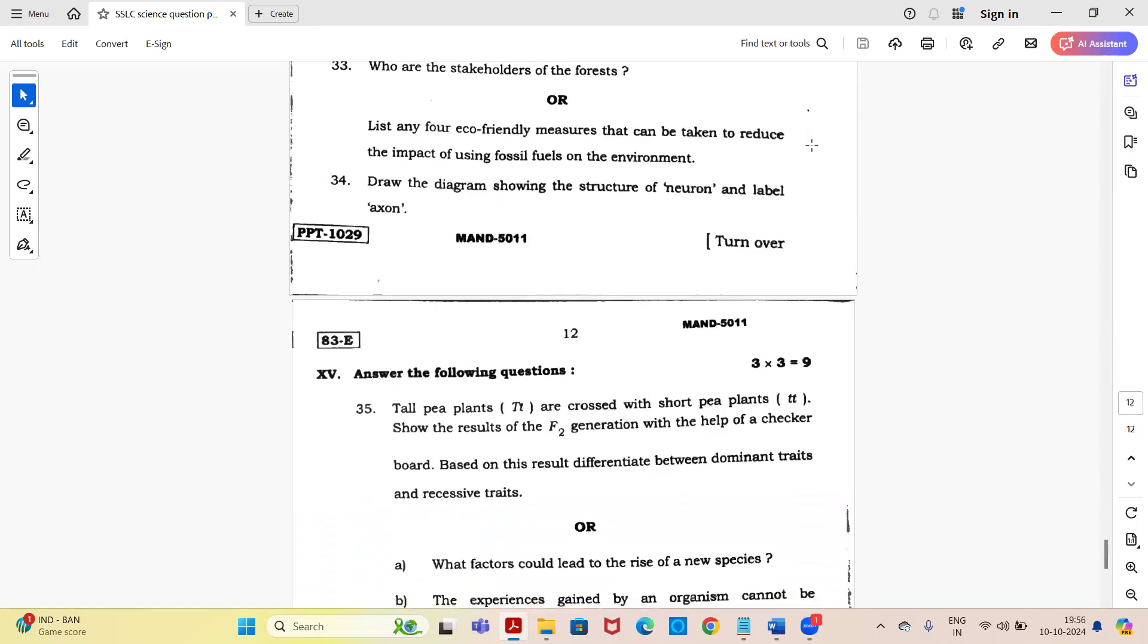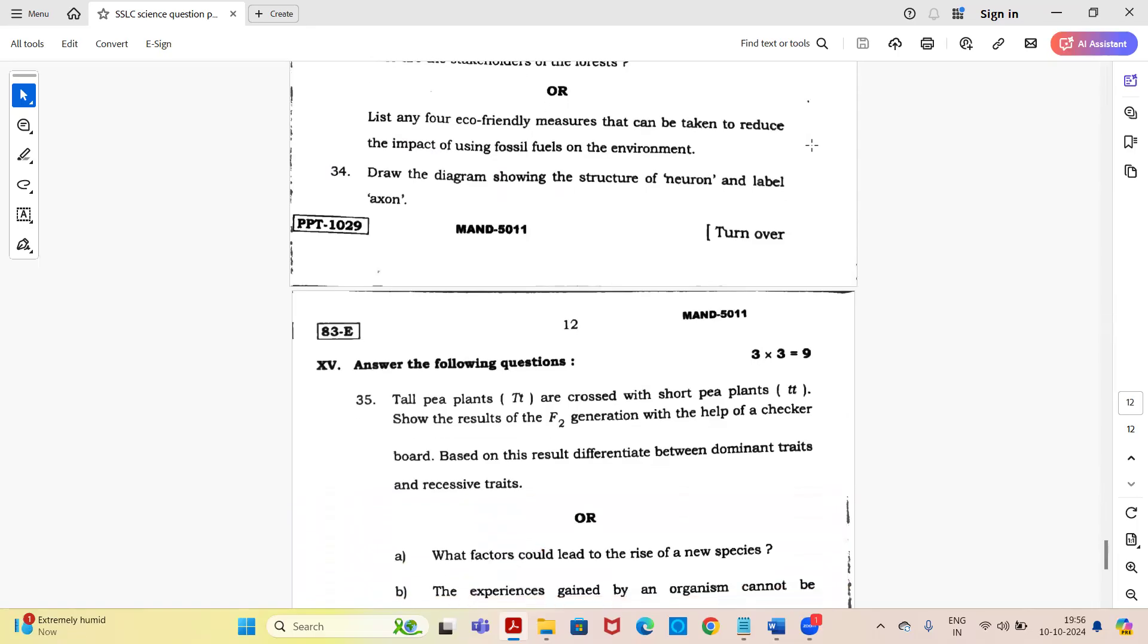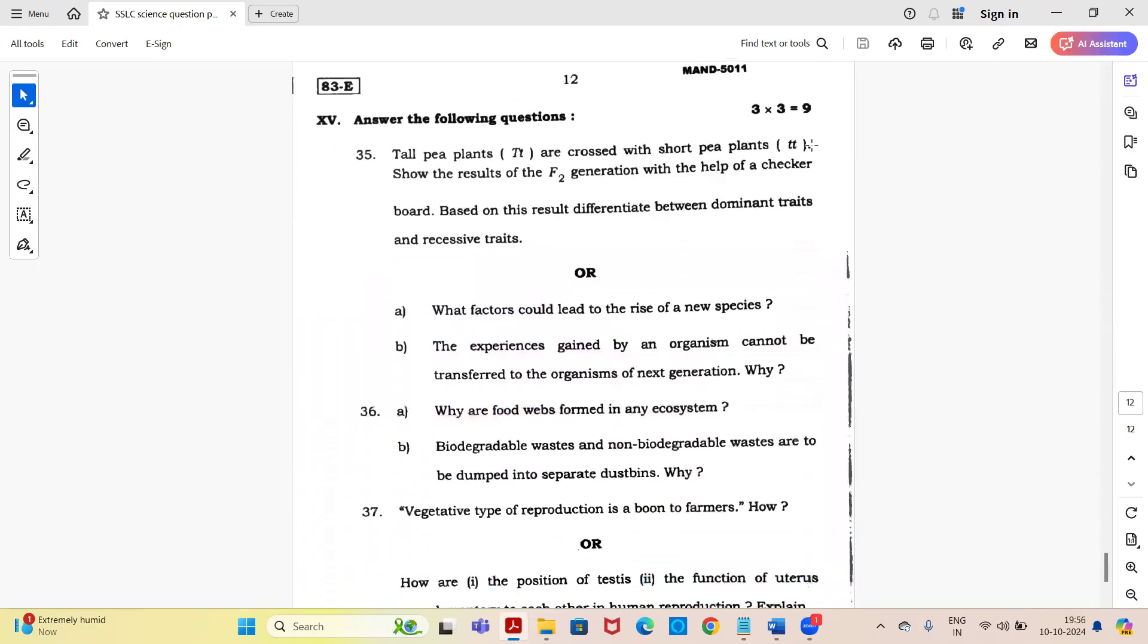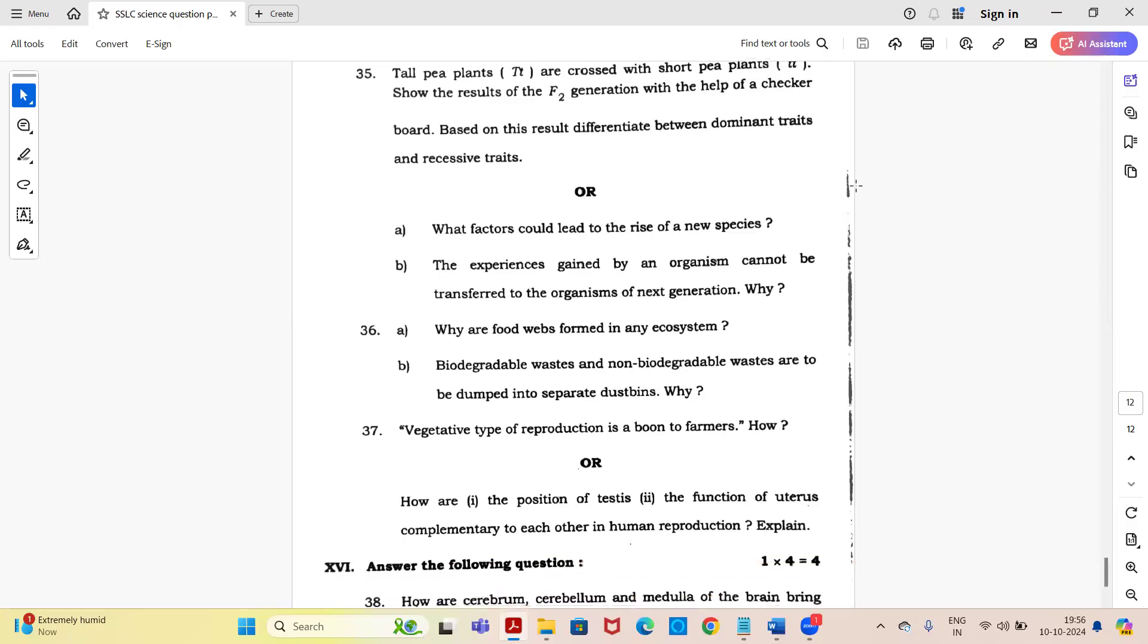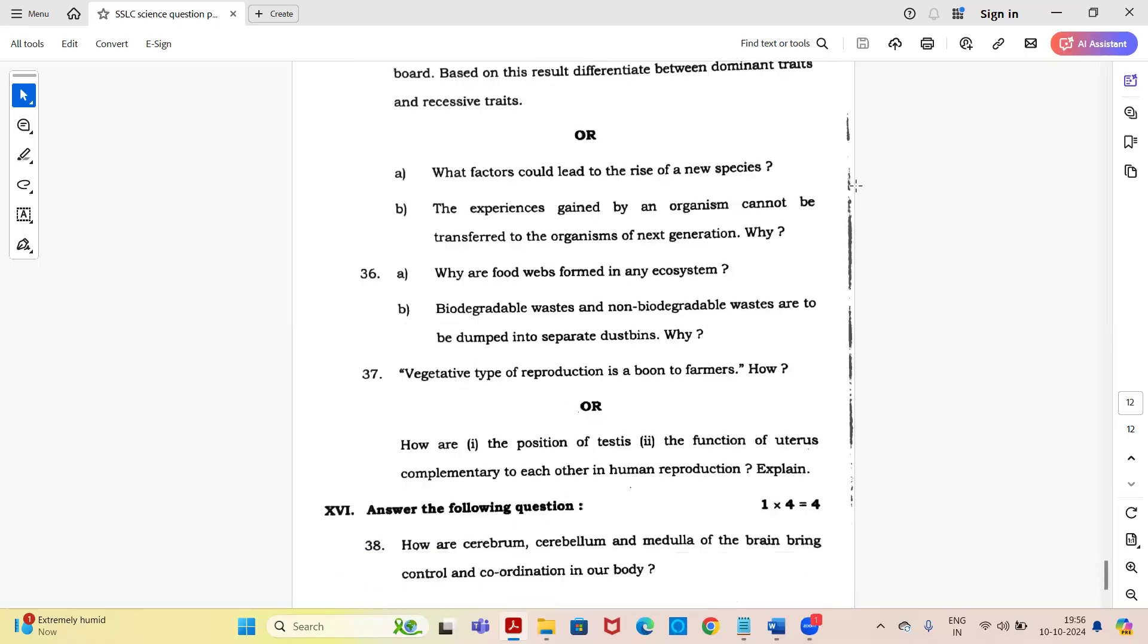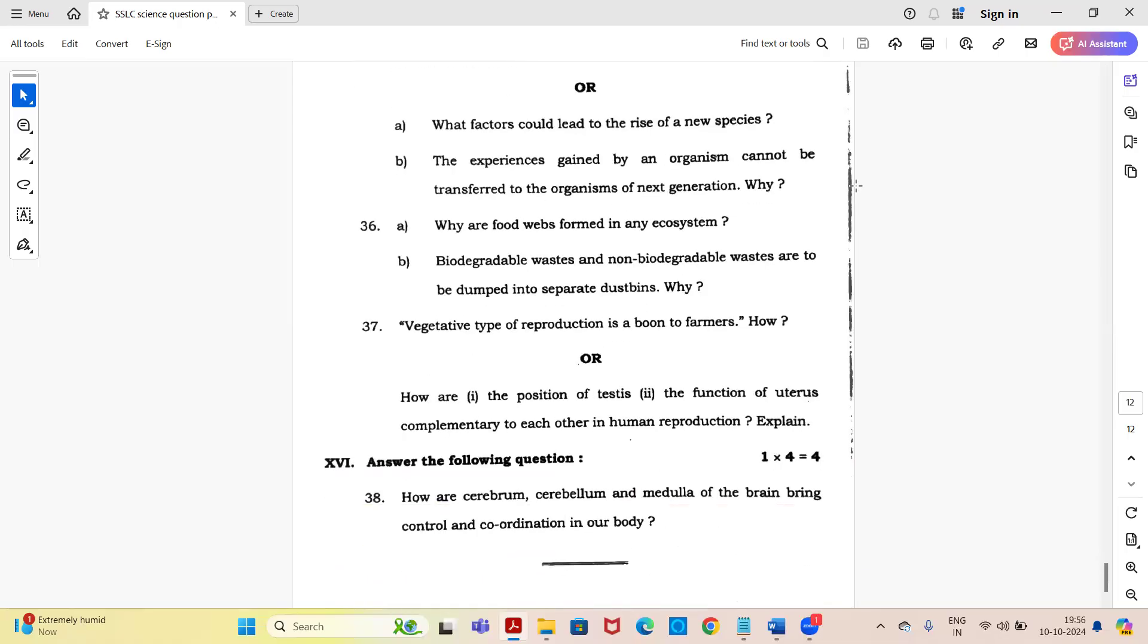Next, draw the diagram showing the structure of neuron and label axon. Next main for nine marks. Tall pea plants are crossed with short pea plants. Show the result of F2 generation with the help of a checkerboard. Based on this result, differentiate between dominant traits and recessive traits. Or you have two sub questions: what factors could lead to the rise of a new species? The experiences gained by an organism cannot be transferred to the organisms of next generations, why?